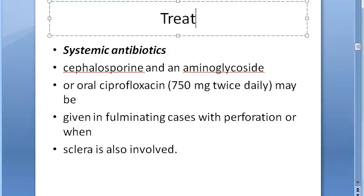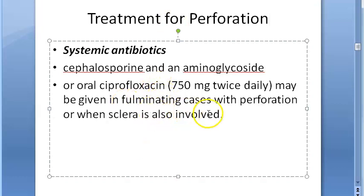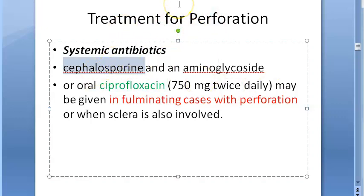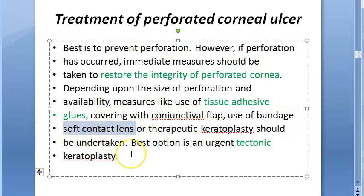For an actual perforation in fulminating cases, systemic antibiotics are given — including cephalosporins, aminoglycosides, and ciprofloxacin. Treatment also involves restoring the integrity of the perforated cornea using the same approaches: tissue adhesive glue, conjunctival flap, soft contact lens, and tectonic keratoplasty to cover the perforation.